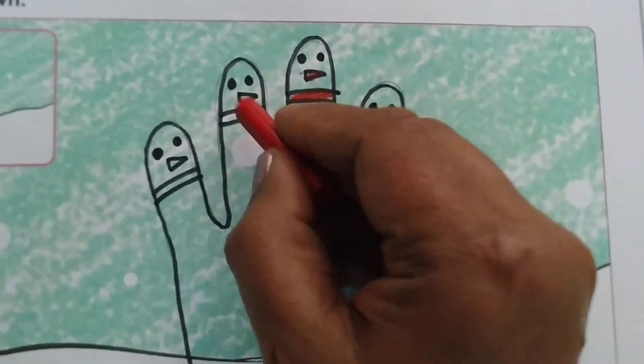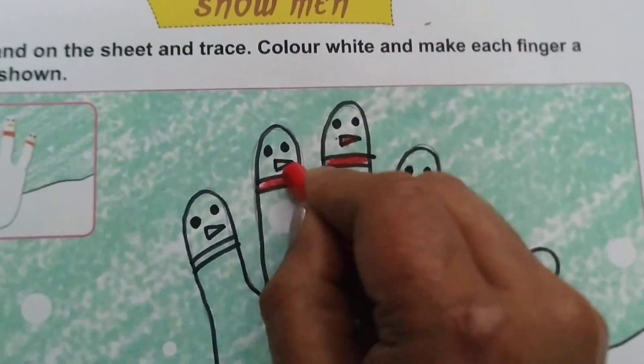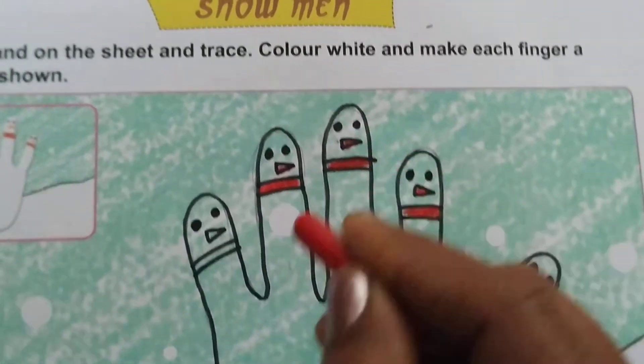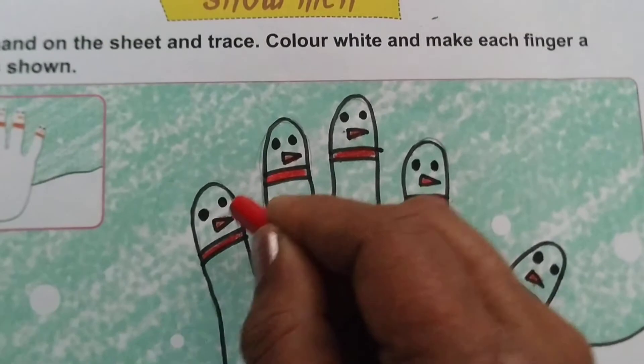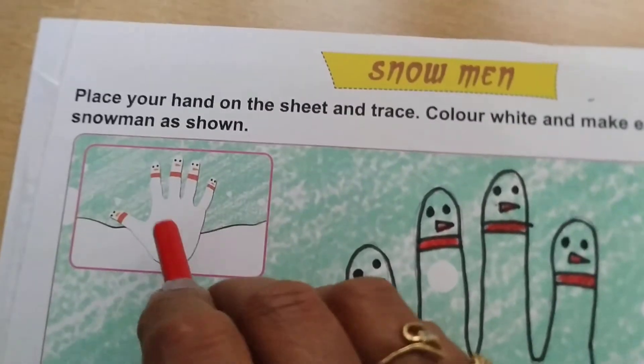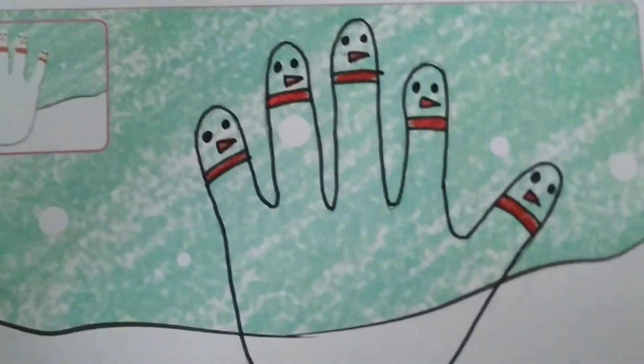And if you have white color, you can color white in the whole hand. I don't have white color, so I am not coloring it. If you have white color in your crayons, you can do white color in the full hand as it is shown here.